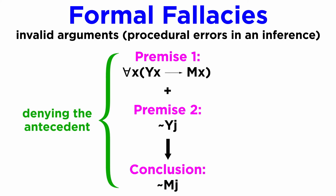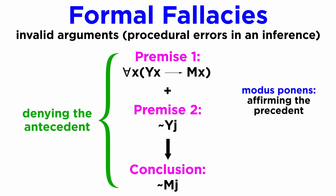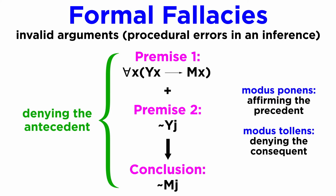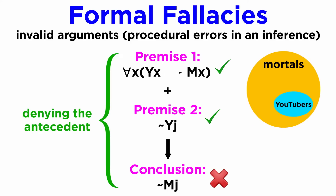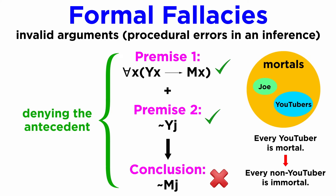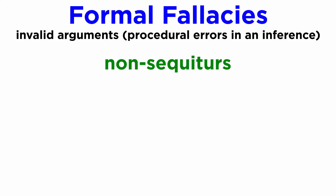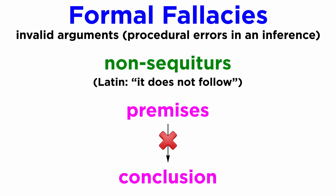This is called denying the antecedent, because instead of applying a valid method of logic — such as modus ponens (affirming the antecedent) or modus tollens (denying the consequent) — it generates a faulty argument, since the truth of the premises does not guarantee the truth of the conclusion. We can verify this in a set theory example, where the set of YouTubers is within the set of mortals, but they're not equal, which means something can be mortal but not a YouTuber. In other words, it tries to convert 'every YouTuber is mortal' to 'every non-YouTuber is immortal,' which doesn't make logical sense. So essentially, formal fallacies are largely each a kind of non-sequitur — from Latin, 'it does not follow' — referring to a conclusion which is not a direct result from its premises, though some authors characterize this as a specific kind of fallacy, also known as fallacy of the consequent.